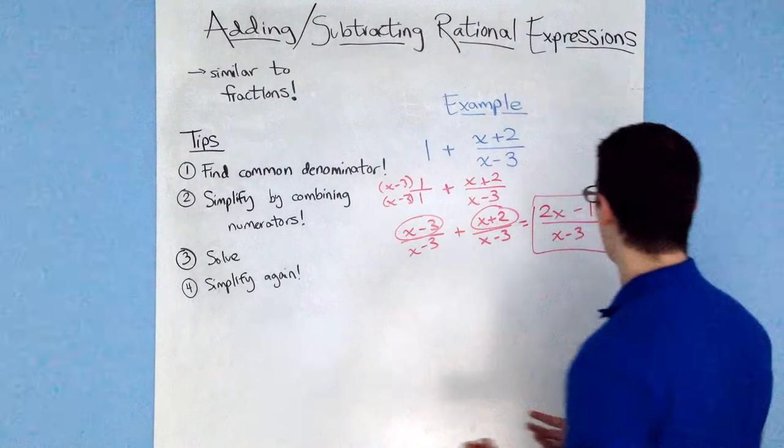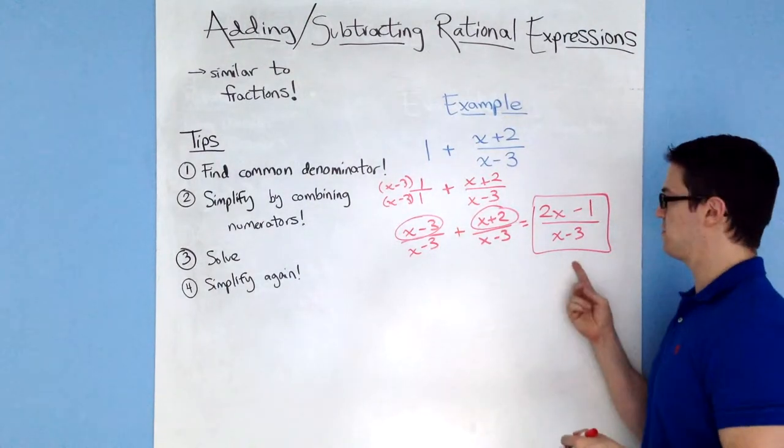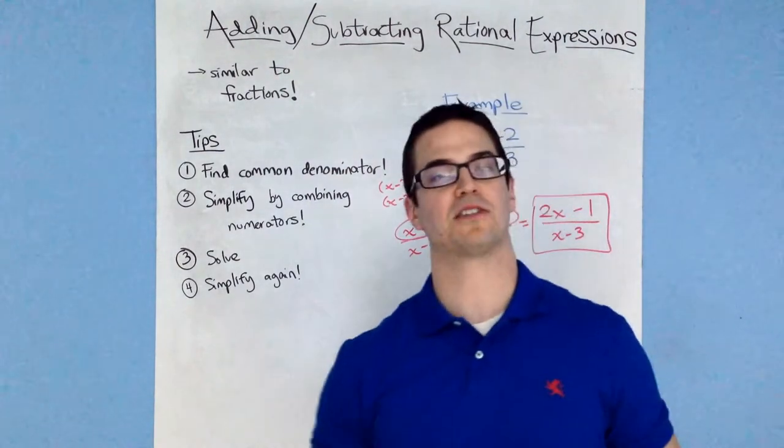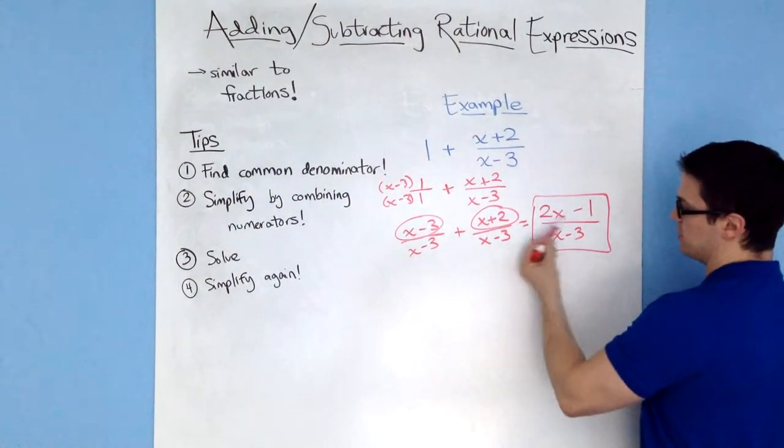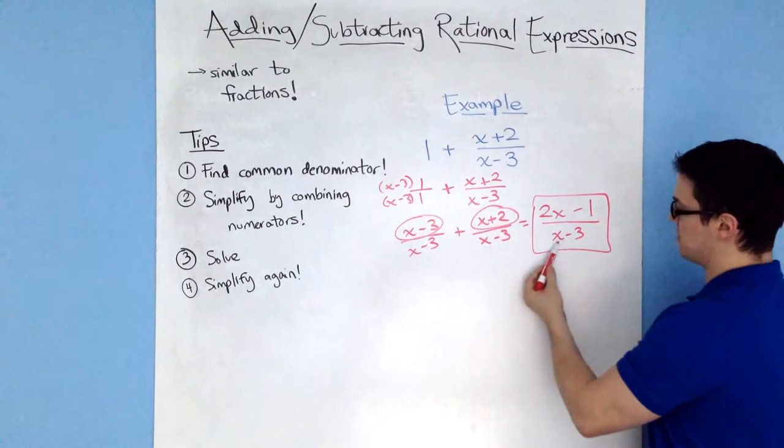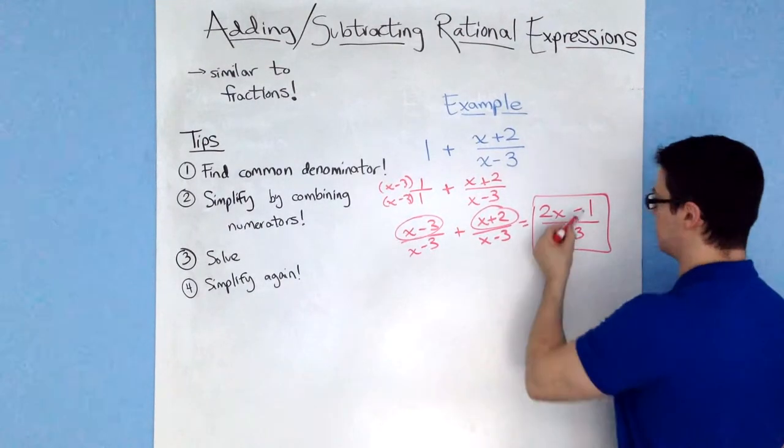An easy way to check your work on this to see if this is correct is to plug in the value of x to be equal to 0. Because then you have easy numbers to work with. You'd have 0 minus 1 which is negative 1, and 0 minus 3 which is negative 3. So you'd have 1 third.